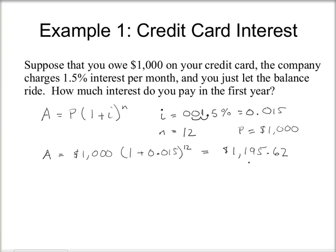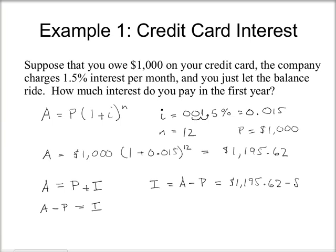So that's the total balance on the credit card after one year. To find the interest paid, recall that the total amount equals the principal plus the interest that accrues during the year. Subtracting P from both sides gives Interest = A minus P, which is $1,195.62 minus $1,000, so the interest is $195.62.